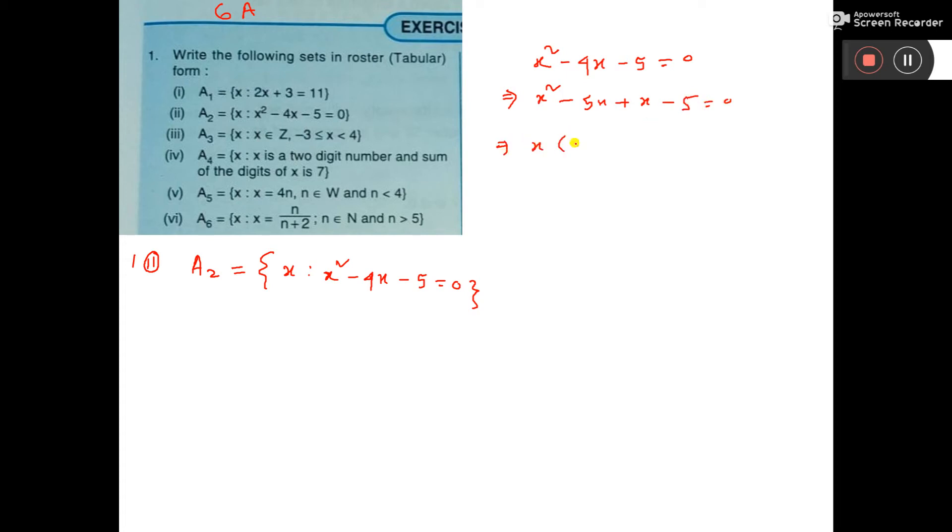Then if we take x common, we get x(x - 5) + 1(x - 5) = 0. Taking (x - 5) common, we get (x - 5)(x + 1) = 0.